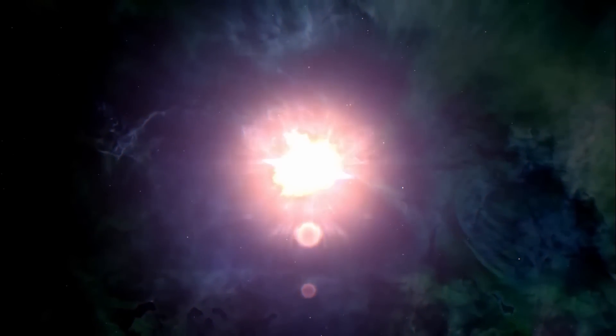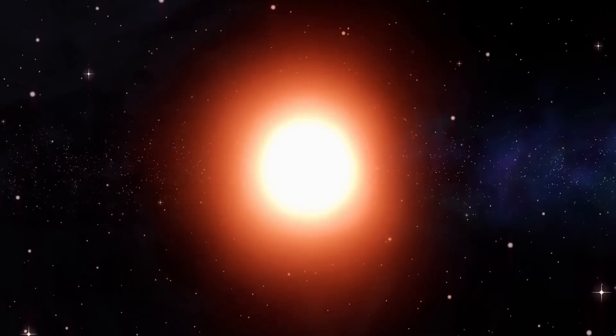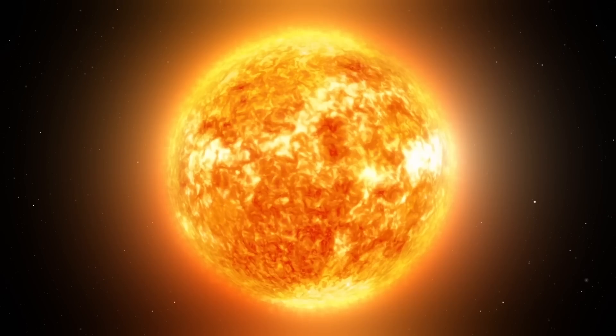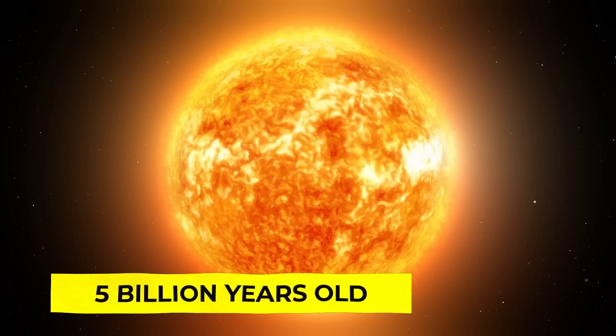Larger stars frequently burn through their hydrogen faster and die off sooner. Despite being only roughly 10 million years old, Betelgeuse is certainly nearing the end of its lifespan. Our Sun, on the other hand, is still in its prime at approximately 5 billion years old.